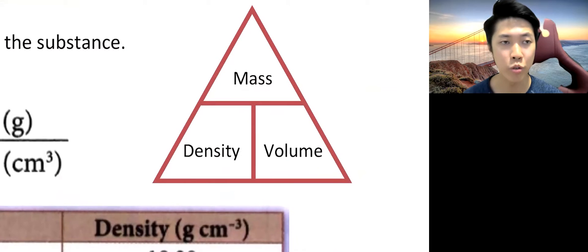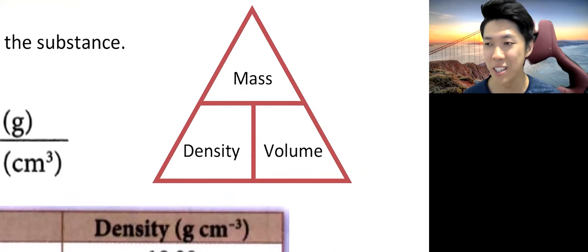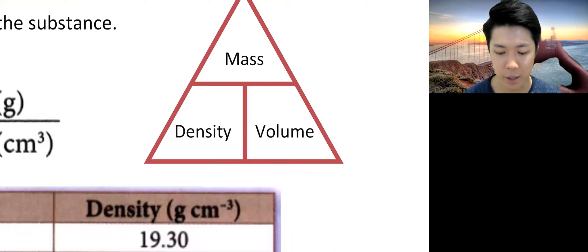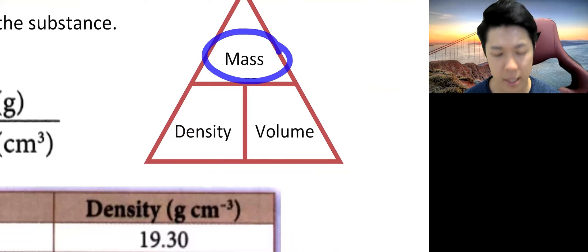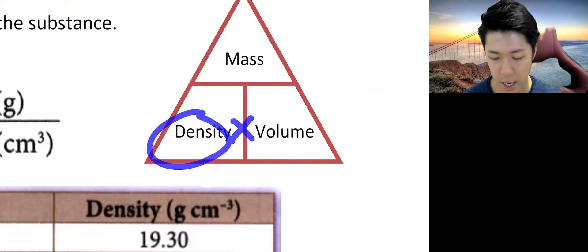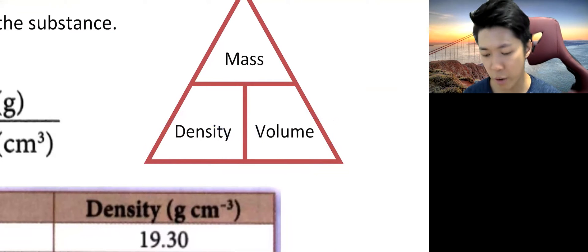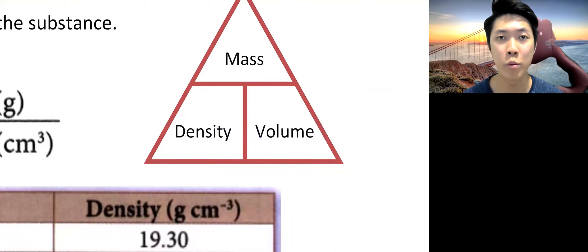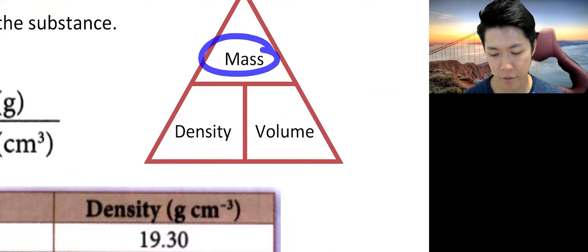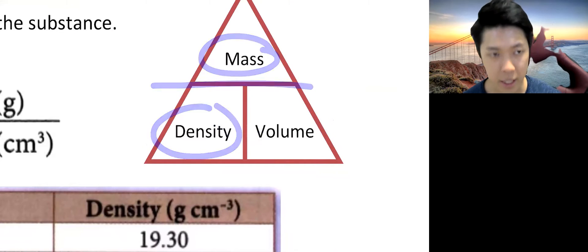And this triangle is not something new to everyone. You've been using this in primary school a lot of times. So for instance, if you're looking for mass, your formula becomes density times volume. If you're looking for volume, your formula has become mass divided by density.